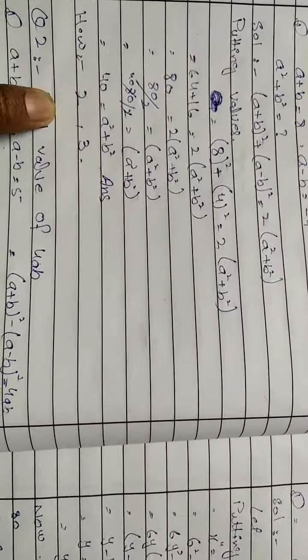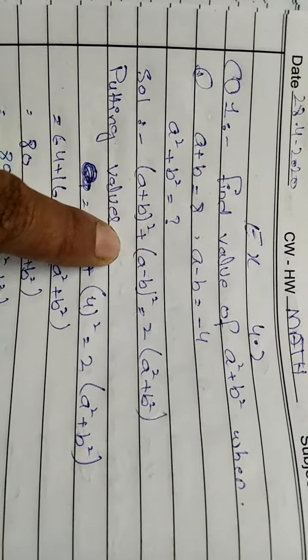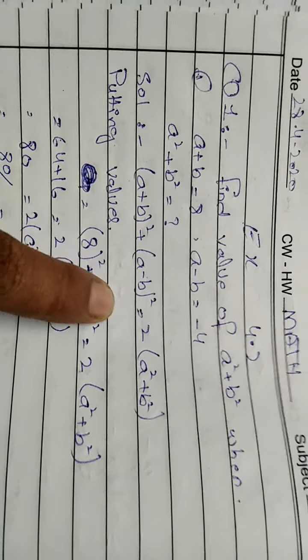(a + b)² + (a - b)² = 2(a² + b²). Putting the values, we get 8² plus the values equal to 64.